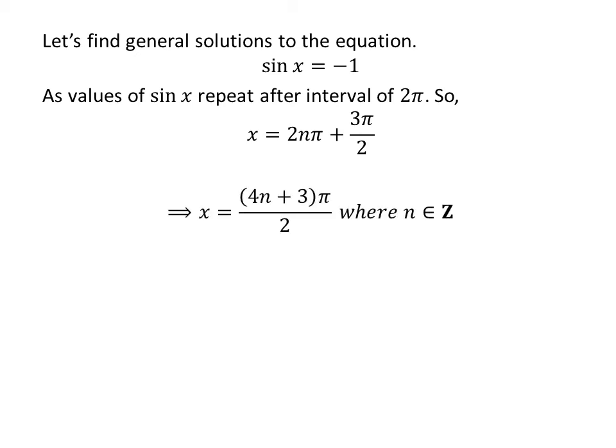Further simplification gives us the general solution x = (4n + 3)π/2, where n ∈ Z.